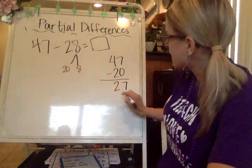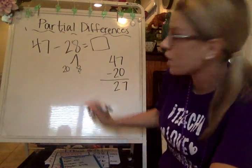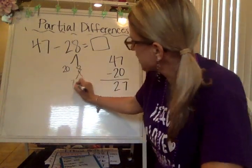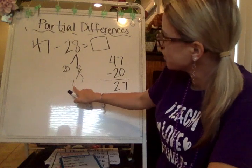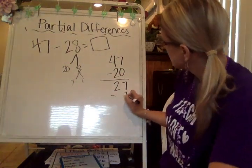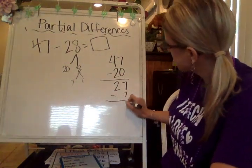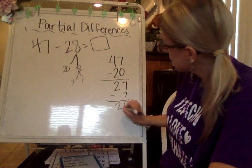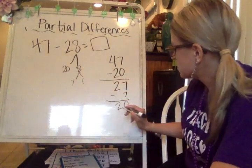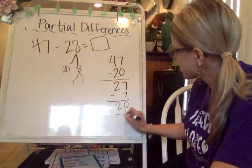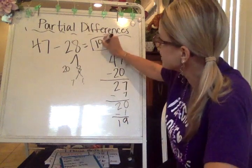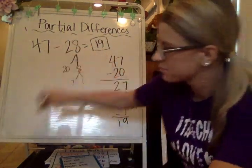Now I have to subtract 8. I only have 7 in the ones, so I'm going to break this apart and get rid of that 7 first, then subtract the 1. So we've got 20, now we're subtracting the 1. 20 minus 1 gives you 19. So the difference is 19.